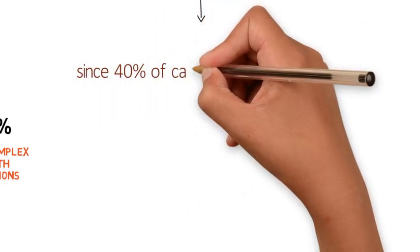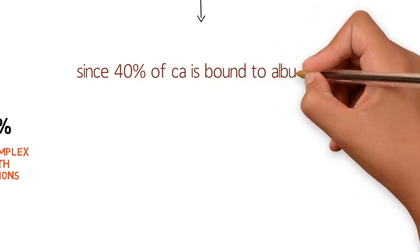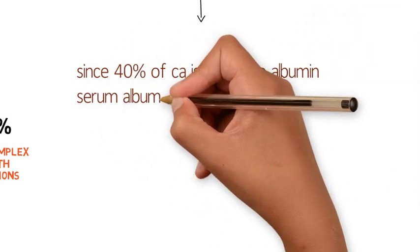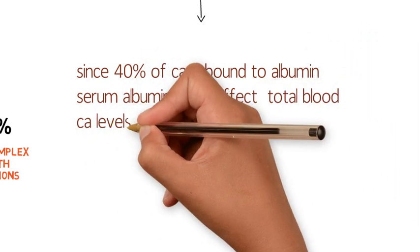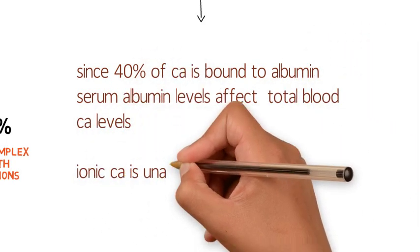Since 40% of calcium is bound to albumin, serum albumin levels affect total blood calcium levels, whereas ionic calcium is unaffected.